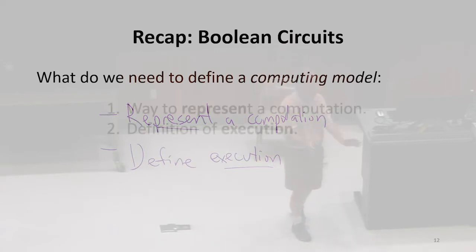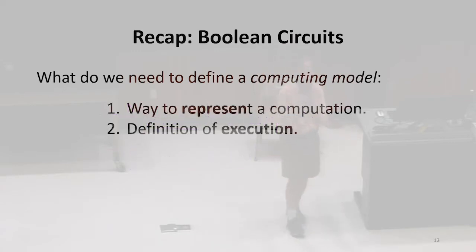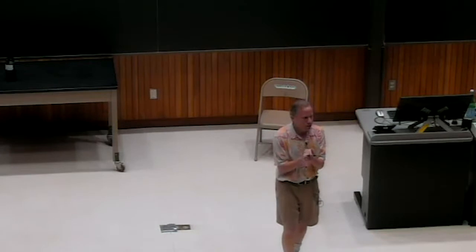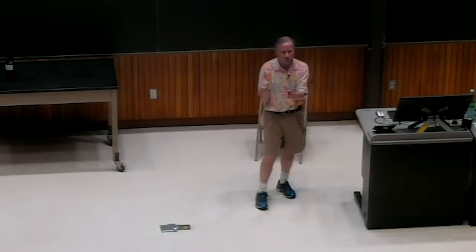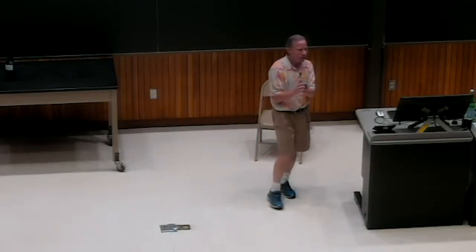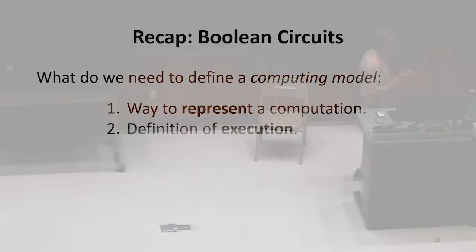But they're really quite different. One is just saying here are all the possible computations we can represent, and one is saying here's what it means to execute an instance. If we're going to have a computing model about Boolean circuits, we need some way to represent a Boolean circuit that makes it very clear what it is. It should be unambiguous, it should define the circuit, so then we can actually execute that circuit. But first we've got to represent it.